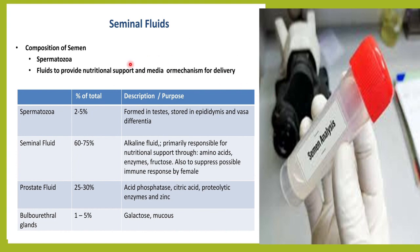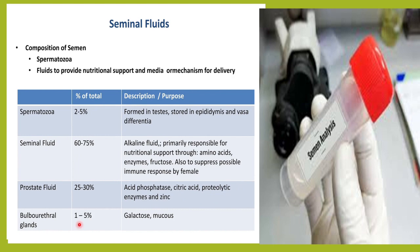Semen is just not made up of sperms. Spermatozoa constitute only 2 to 5 percent of the semen. 60 to 75 percent of the seminal fluid comes from the seminal vesicles — it is an alkaline fluid responsible for giving nutritional support to the sperms, including amino acids, fructose, and enzymes. Prostatic fluid comprises around 25 to 30 percent and provides acid phosphatase, citric acid, proteolytic enzymes, and zinc. The bulbourethral glands constitute around 1 to 5 percent and give galactose and mucus.